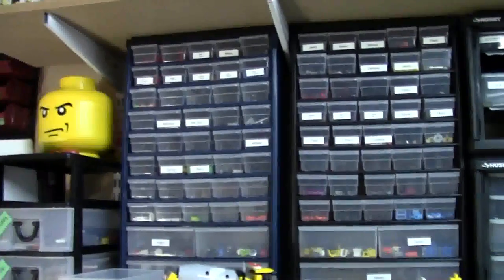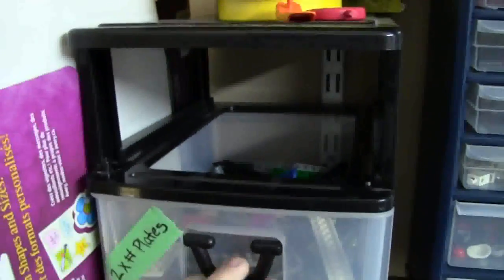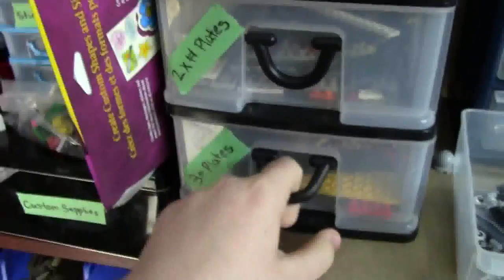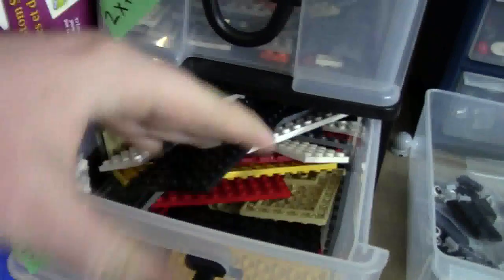But that's not all. I sort all my minifigure pieces in these little stack-on bins. This drawer's currently missing, but I sort all my plates in this container. Two by whatever plates, one by whatever plates, and large plates here.